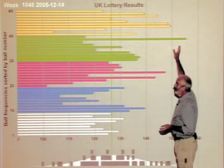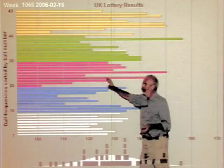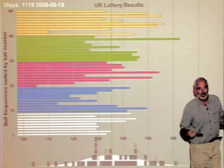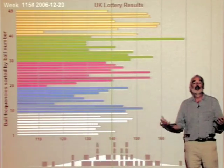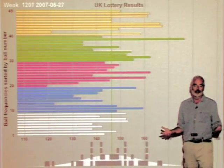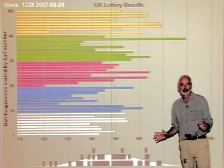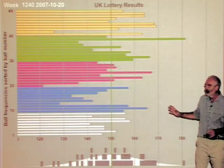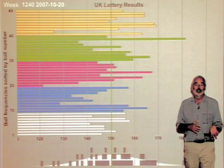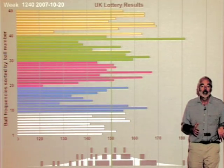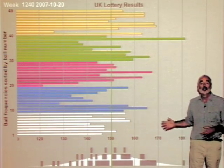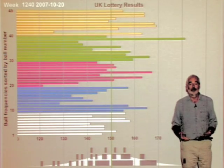Some number has to be top, some number has to be bottom, but it doesn't tell you anything about whether that number is a hot number or a cold number or anything like that — it's all just chance. So it's a real warning that in any league table, somebody has to be top and somebody has to be bottom, and you really have to check using some statistical methods whether this is just due to chance alone.